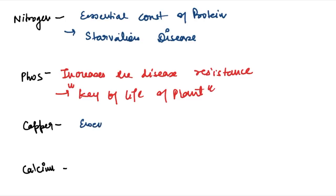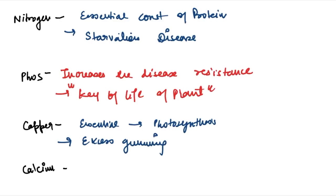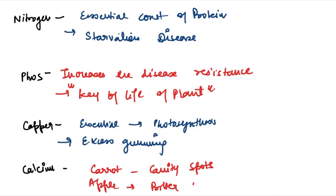Copper is very essential for photosynthesis. Gumming occurs due to deficiency of copper. Apart from blossom end rot of tomato, calcium deficiency in carrot causes cavity spots, and in apple it causes bitter pits (brown bitter pits). These are important facts and diseases from an exam point of view.